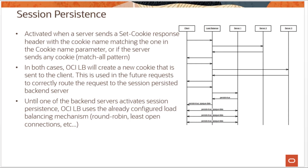If the back-end servers change any of the defined cookies, the service recomputes the cookie value and resends it to the client. The second option is load balancer cookie stickiness, where the load balancer inserts a cookie into the response. This method is useful when application and web back-end services cannot generate their own cookies. Until one of the back-end servers activates session persistence, the load balancer uses either round-robin, least open connection, or any other configured load balancing method.